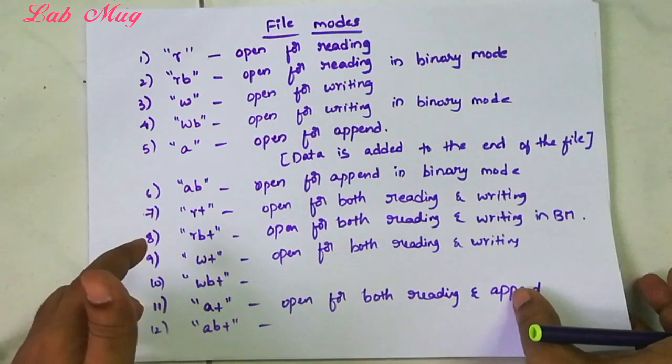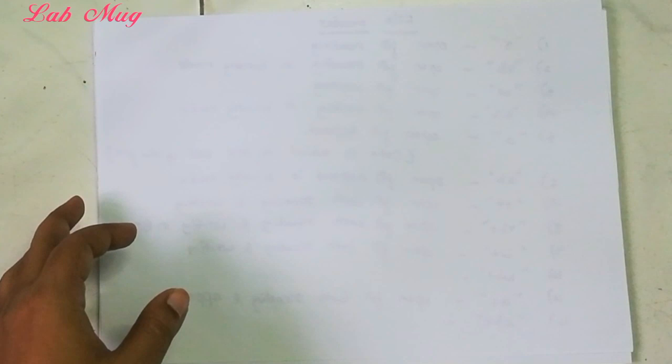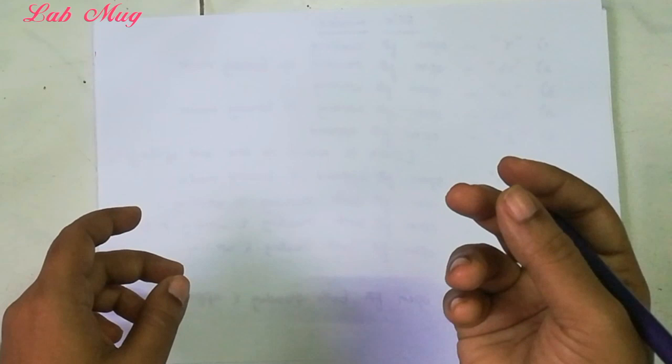So up to here we covered the functions related to files and the modes. Now let's see an example program. When we see the example program we'll get clear information. This is a basic example program, very small task. Using files we can perform many operations. Rather than explaining on paper, we'll see it in the system for better results.